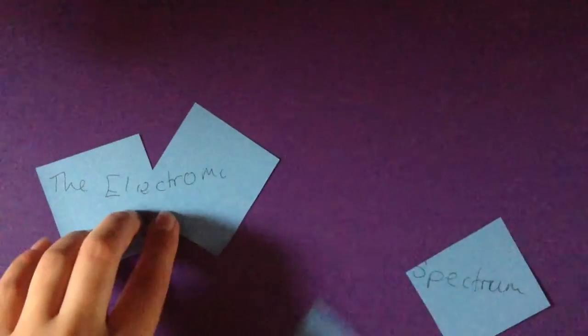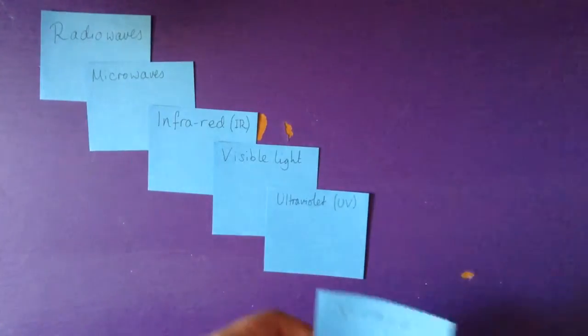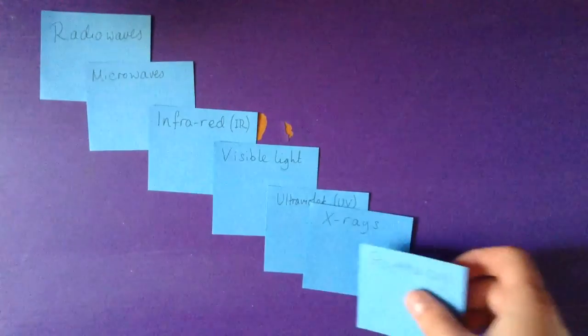The Electromagnetic Spectrum. From largest to smallest wavelength, the electromagnetic spectrum goes radio waves, microwaves, infrared, visible light, ultraviolet, x-rays, gamma rays.